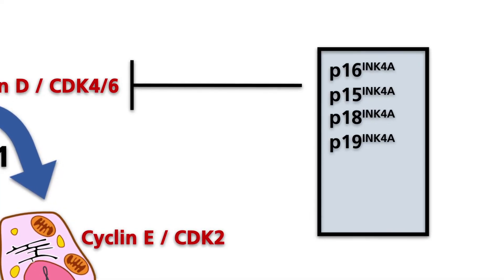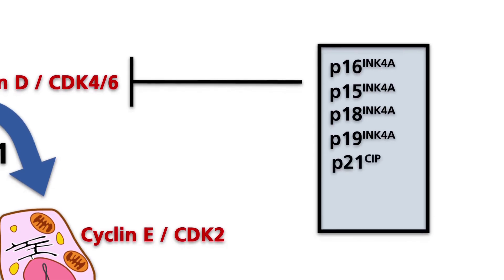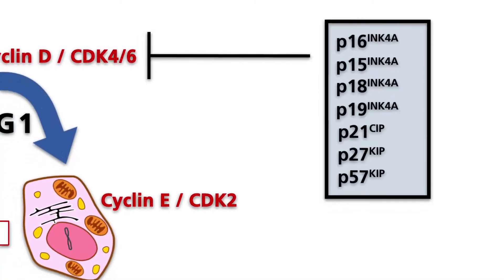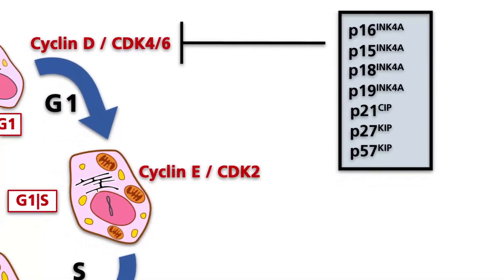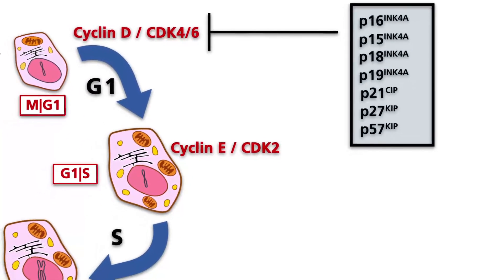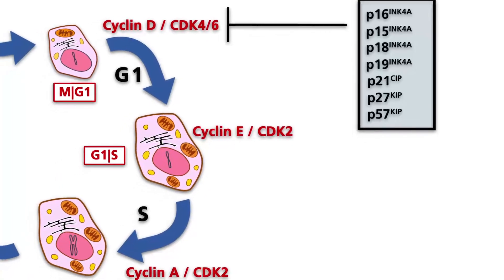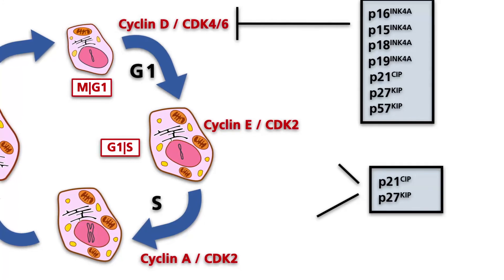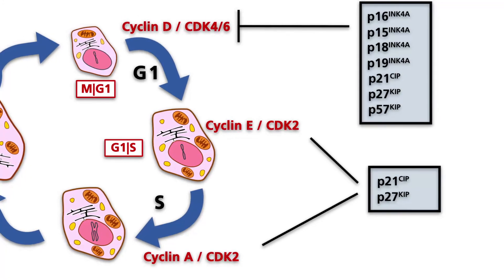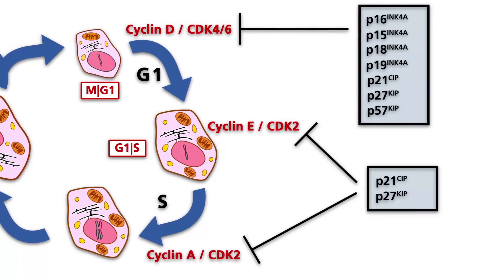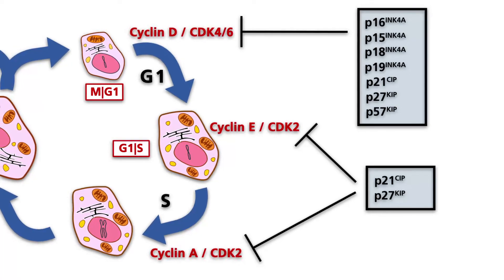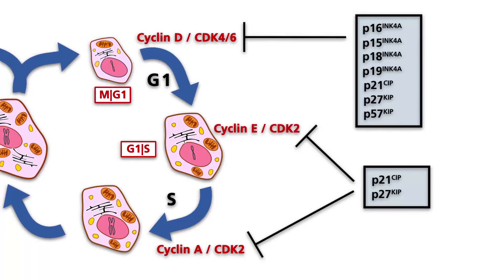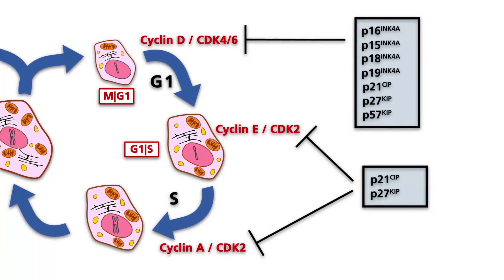Second, P21-SIP, P27-KIP, and P57-KIP are inhibitors of the SIP-KIP group. Both inhibitor families are able to block the cell cycle at the G1/S checkpoint. In addition, CDK inhibitors of the SIP-KIP family can also block the cycle in other phases. Around 30% of all tumors harbor inactivating mutations in at least one CDK inhibitor.